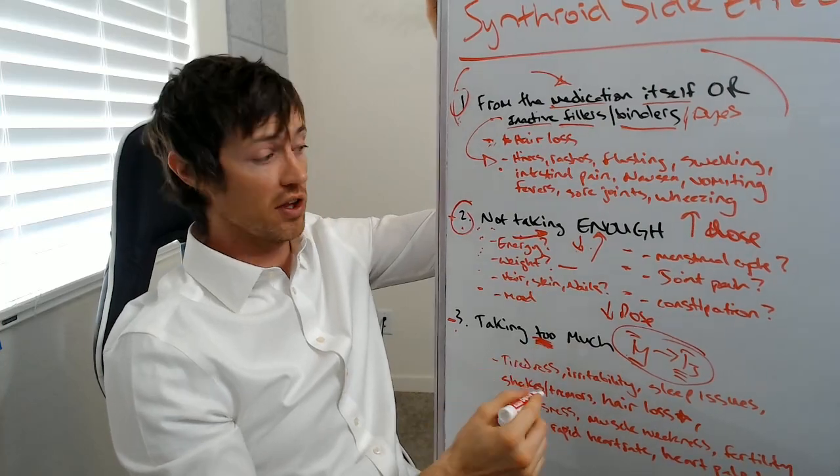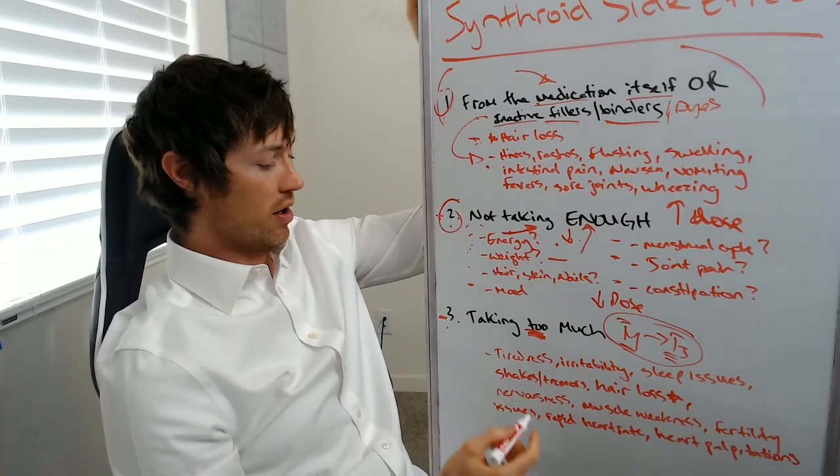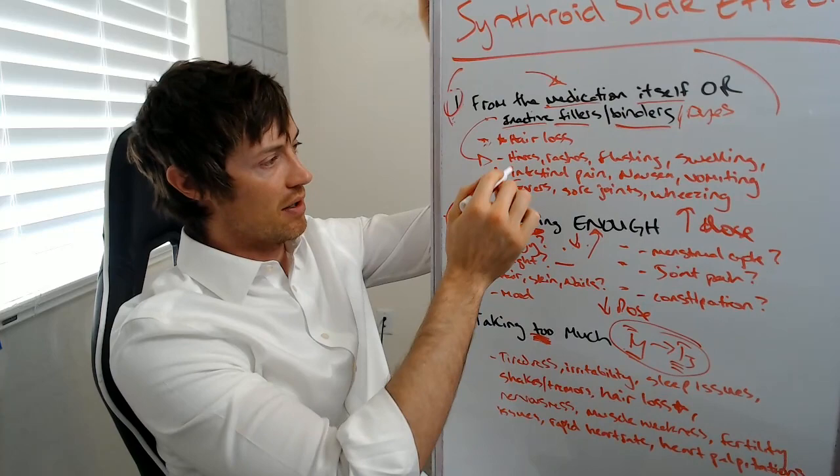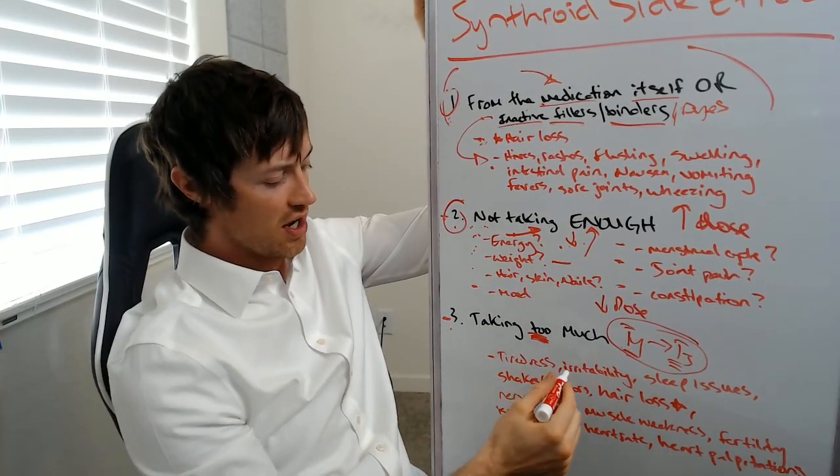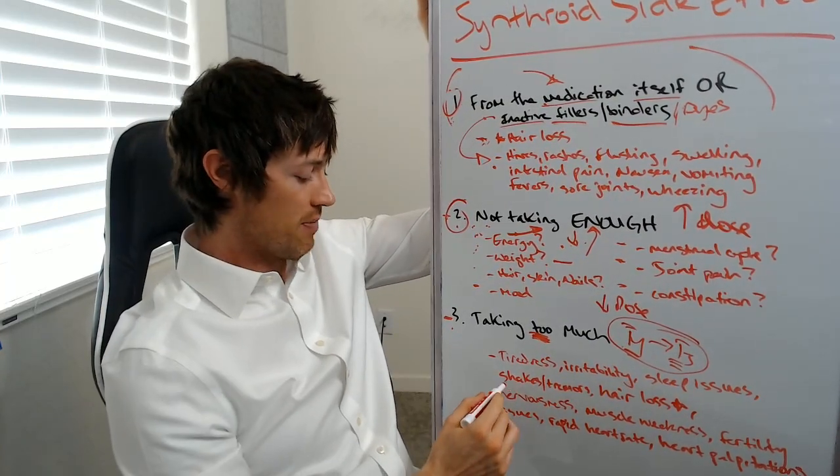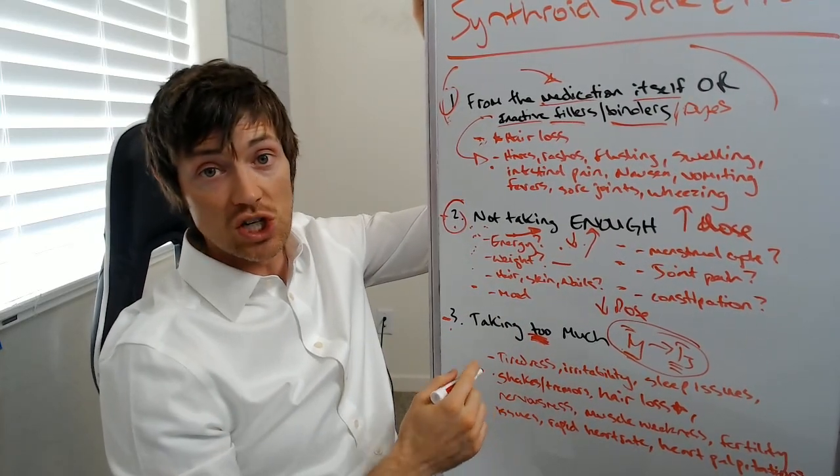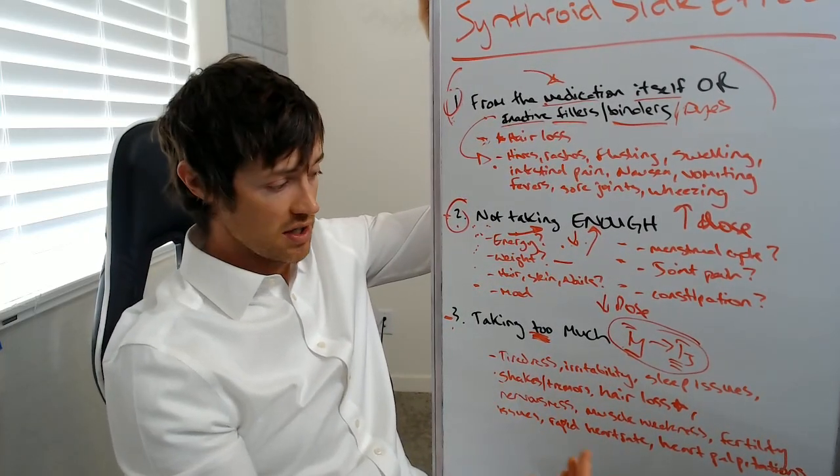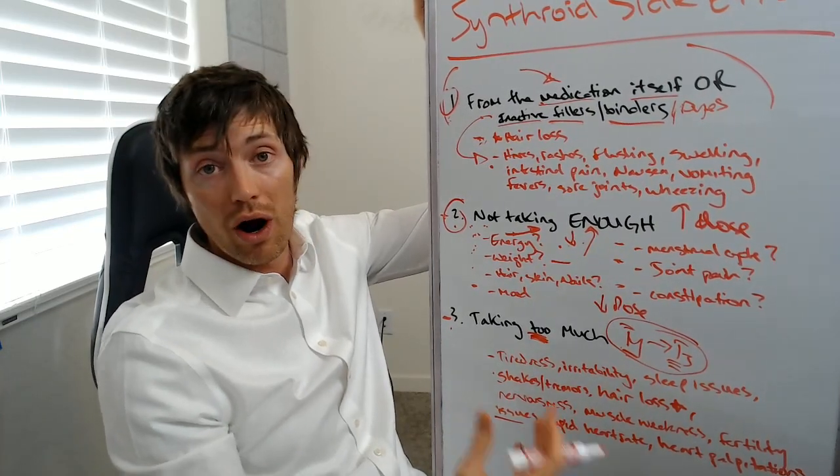Now, these symptoms are the complete opposite of the ones of people who are not taking enough. So people who fall into this category tend to feel a little more fatigued or tiredness. It's a different type of fatigue that people get when they're taking too much. They can also get irritable. They can have sleep issues or sleep disturbances, usually insomnia. They can have shakes or tremors. You can feel like your hands are just shaking after you started taking your thyroid medication. That might be an indication you're taking too much. It can cause muscle weakness or sore joints. It can cause fertility issues like we talked about previously, and it can cause finally a rapid heart rate or heart palpitations.